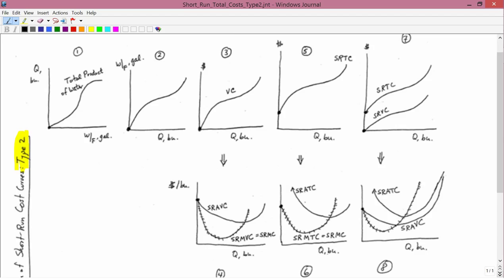So we start with graph number 1. You can see there's a standard type 2 cross-section of the production function. First convex and then concave. That's the total product of water curve. Q on the vertical axis, water holding fertilizer fixed on the horizontal.